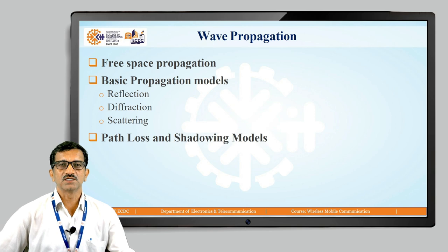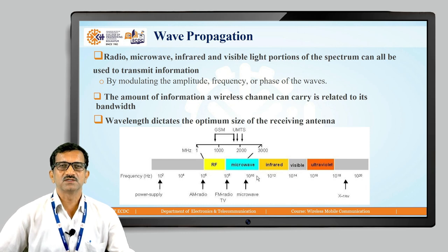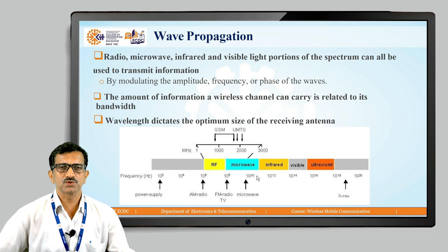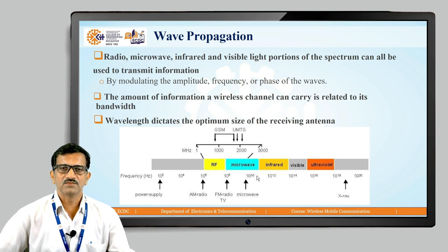In order to get whatever the received power is at the receiving antenna — in wave propagation, radio, microwave, infrared, and the visible light portions of the spectrum can all be used for transmitting information by modulating the amplitude, frequency, and phase of the wave. Different digital modulations can also be used for transmission. The amount of information a wireless channel can carry is related to its bandwidth — the band of frequencies over which the information signal is present.